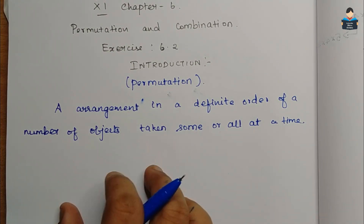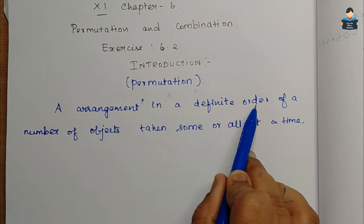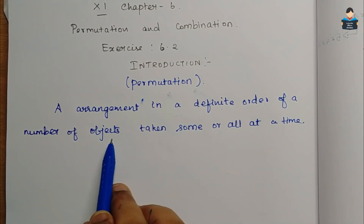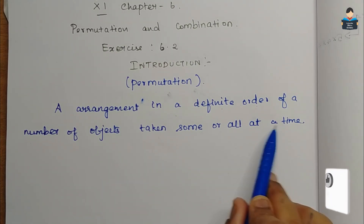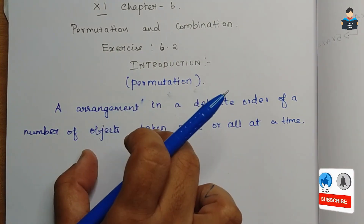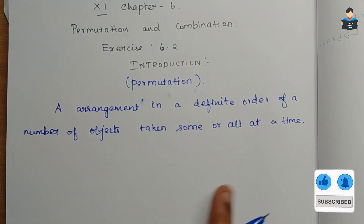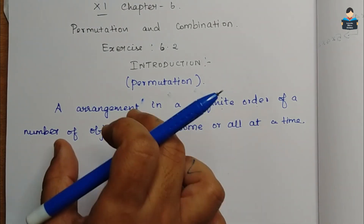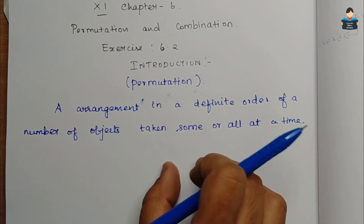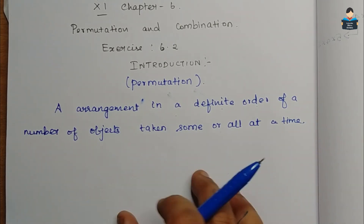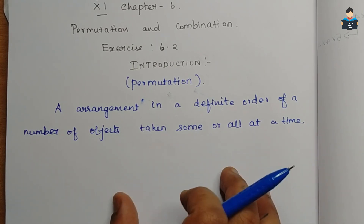Permutation: an arrangement in a definite order of a number of objects, taken some or all at a time. Permutation is the arrangement of a number of objects — one object arranged, taken some or all at a time, all objects arranged.